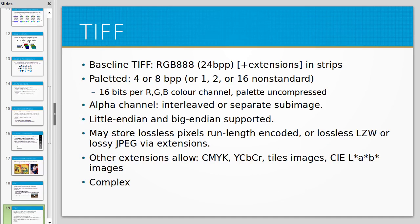Another format is TIFF, which encodes images into RGB strips. Baseline TIFF is 24 bits per pixel, but there are extensions allowing other colour representations, including paletted colours with a lookup table. One problem with TIFF is the large number of non-standard extensions — you need to know what kind of TIFF image you have and what extensions are supported. These include run-length encoding, lossless LZW, and others. It's a complex format.